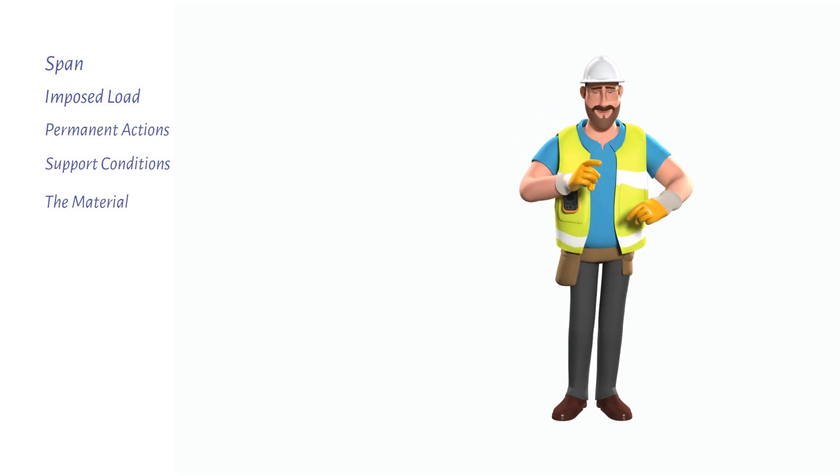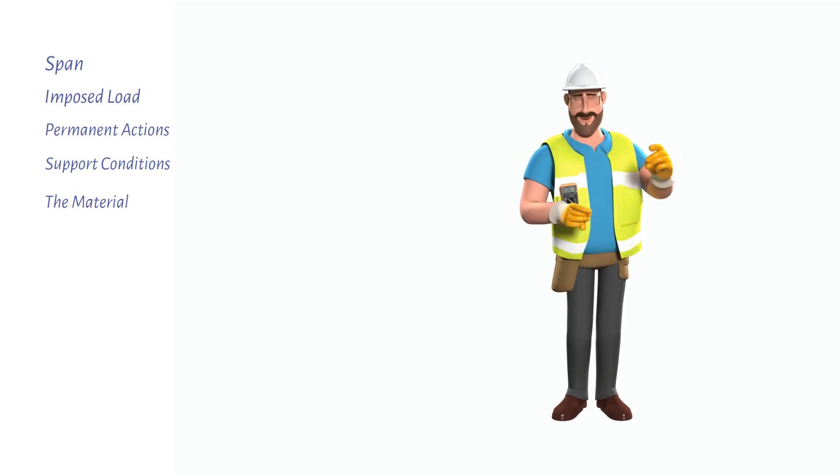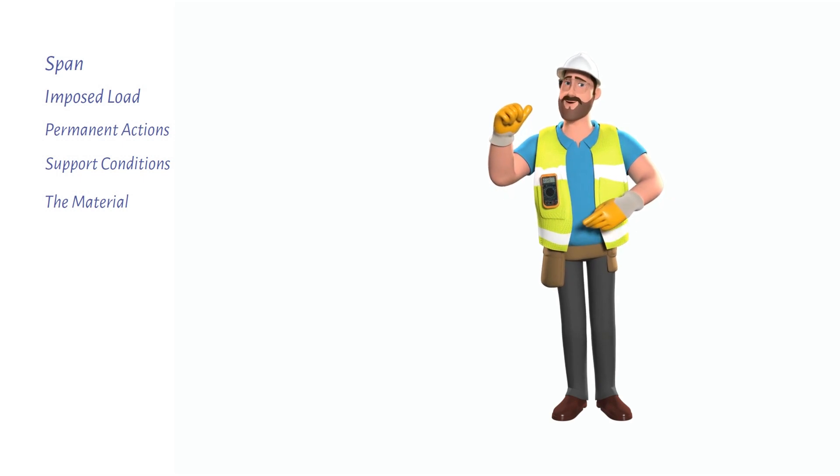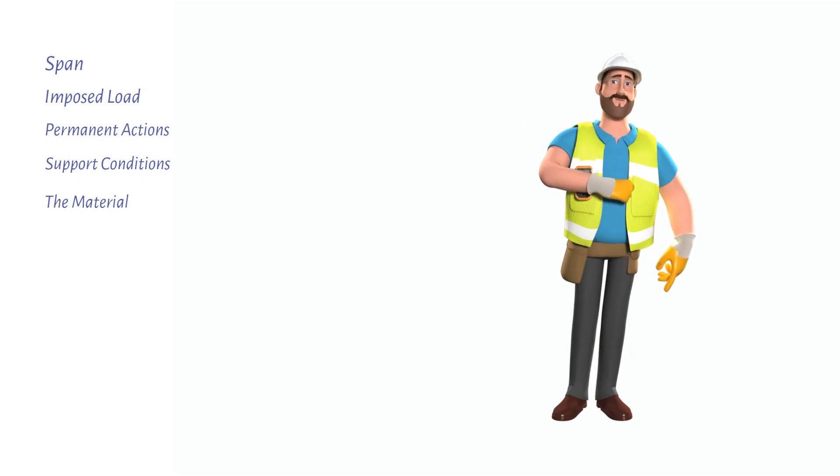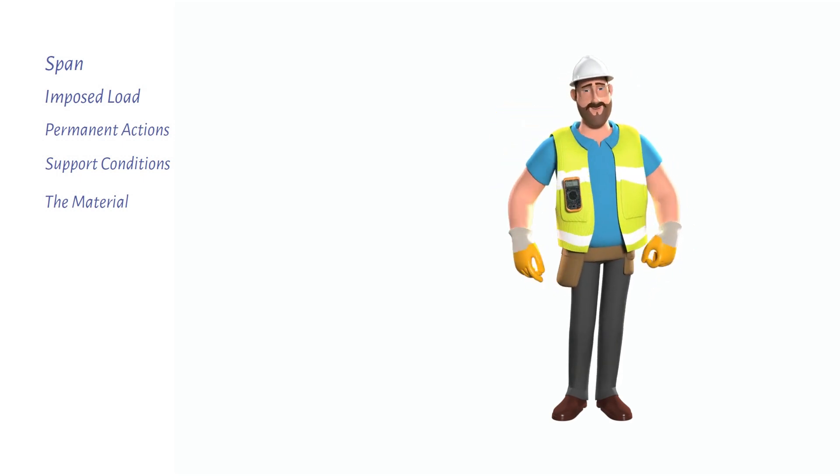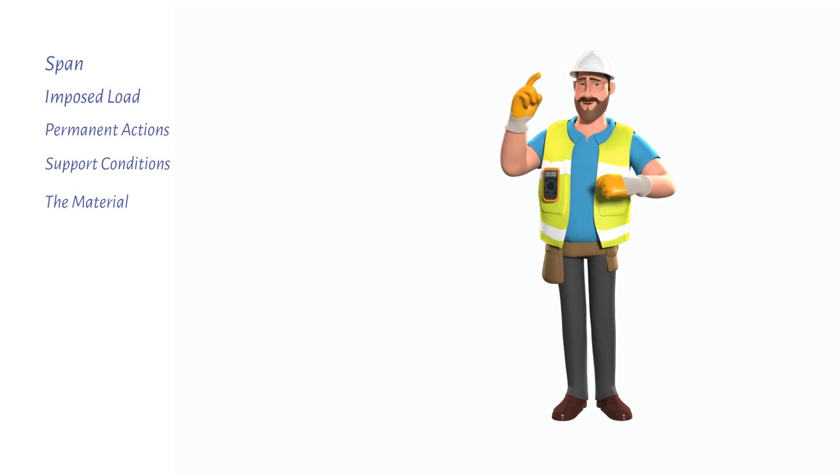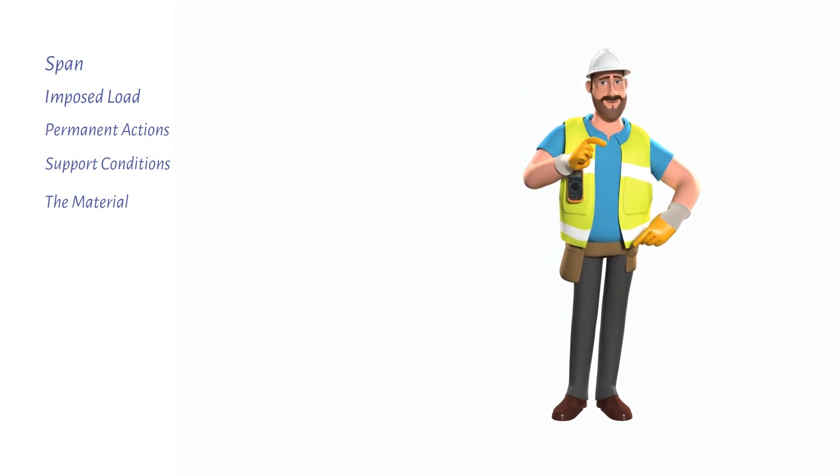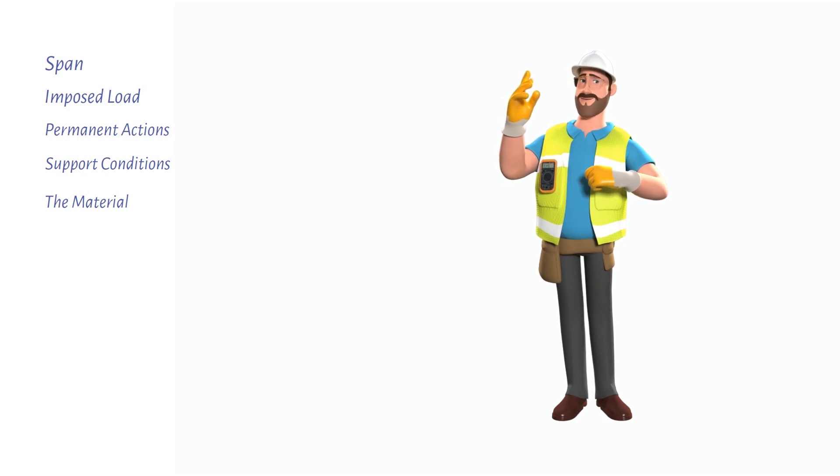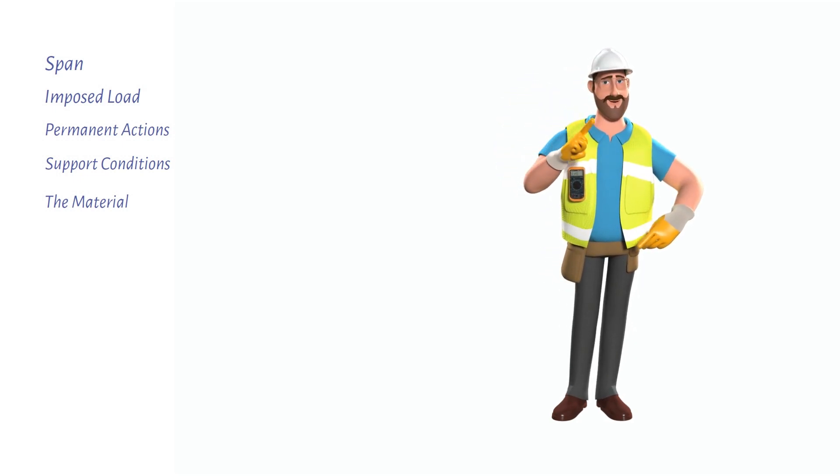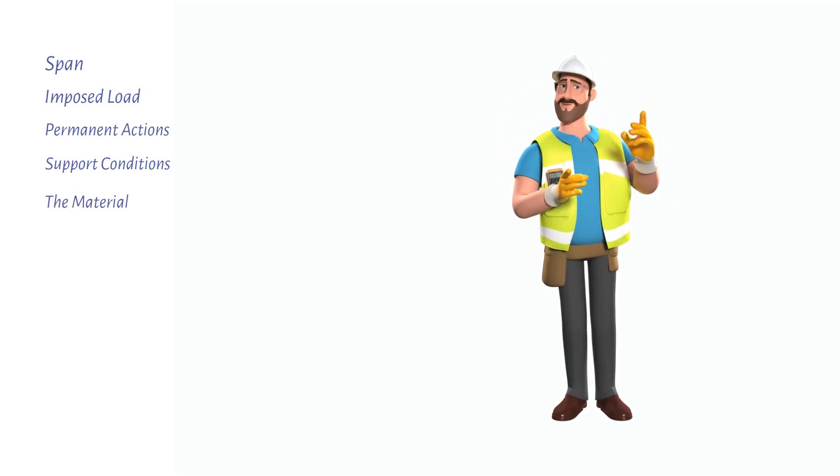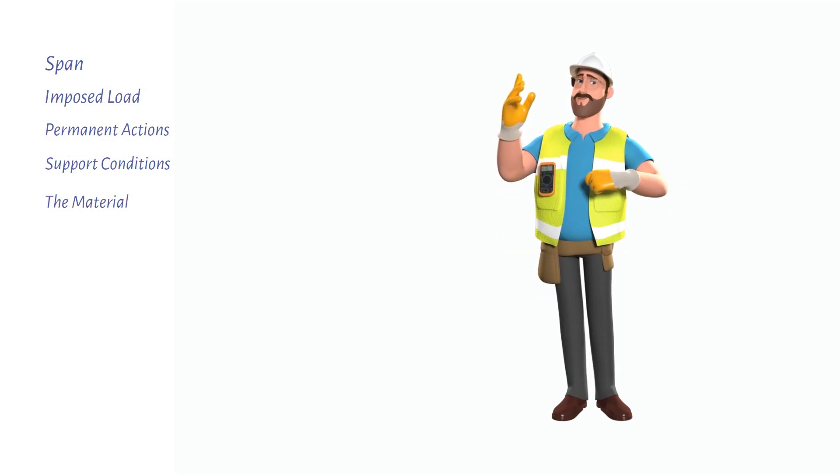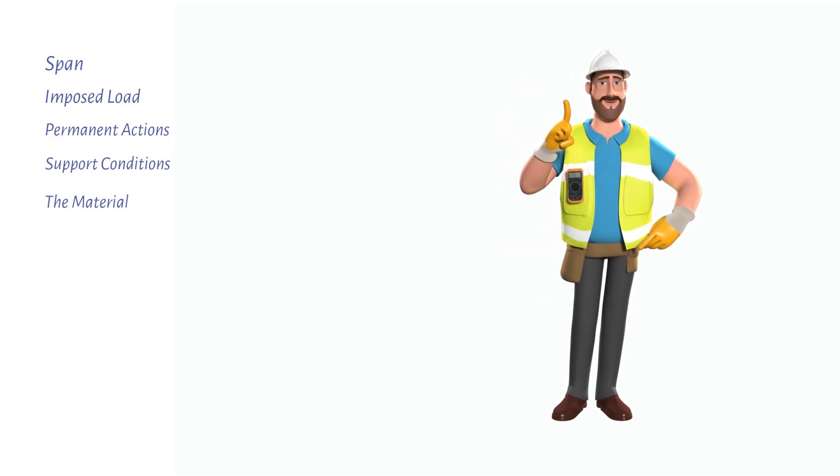Simple rules of thumb can be used to develop an understanding of how to estimate a structure's member size. By understanding this, the structural engineer will be able to spot elements that are undersized in structures before carrying out detailed design and avoid making uneconomic decisions by oversizing elements.